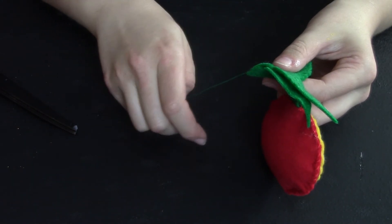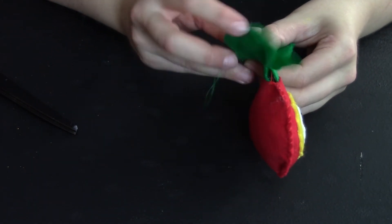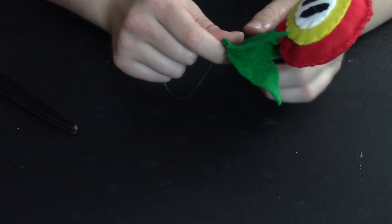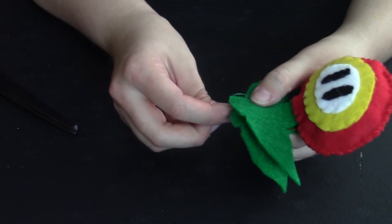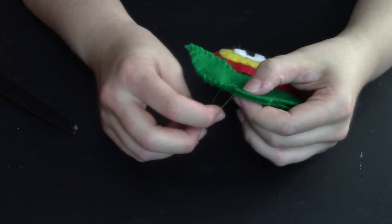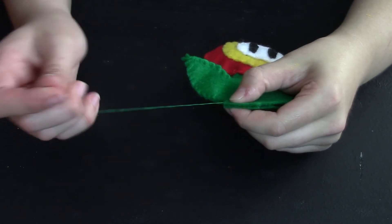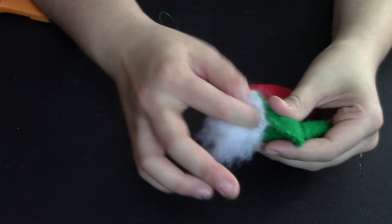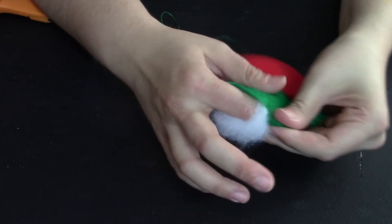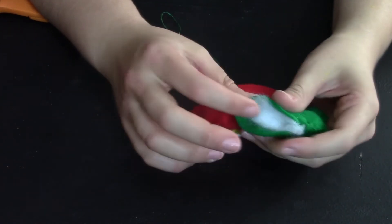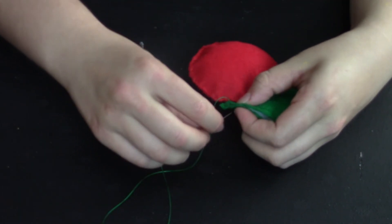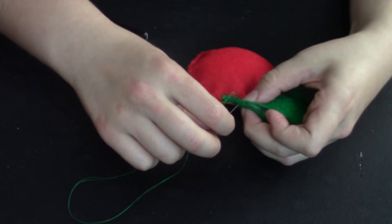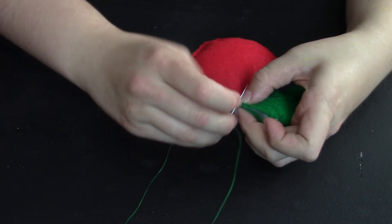You're going to switch to some green thread and begin sewing around the stem, leaving an area open on one end so you can stuff it. Once you have it stuffed the way you like it, go ahead and sew up that last end and you're done.